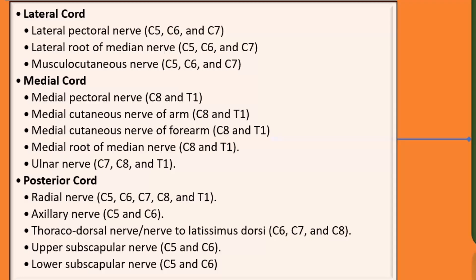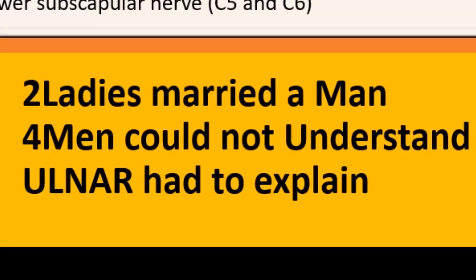For mnemonics: for the lateral cord we use 'two ladies married a man' — the two L's and one M matching the initials of the branches. For the medial cord: 'four men could not understand' — four M's and the U. For the posterior cord: 'all not hard to explain' — spelling out the five branches from the posterior cord.